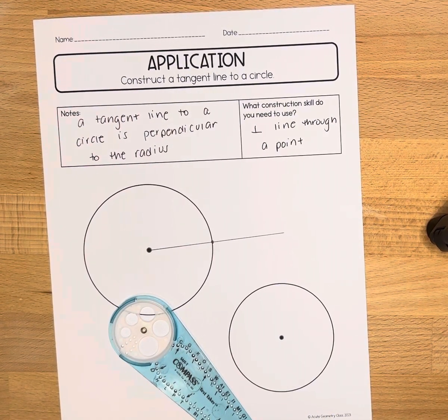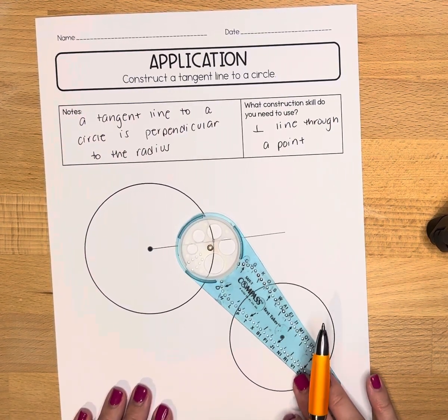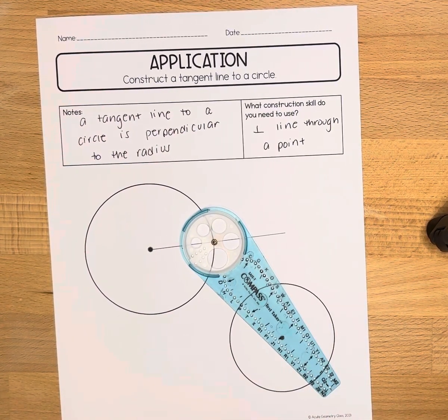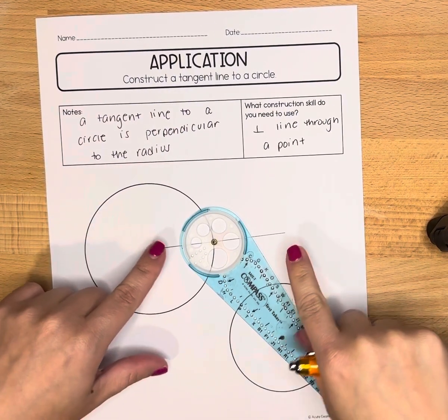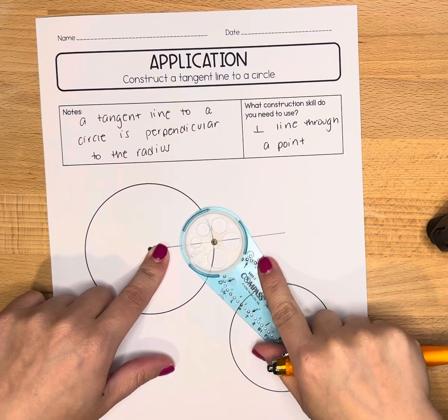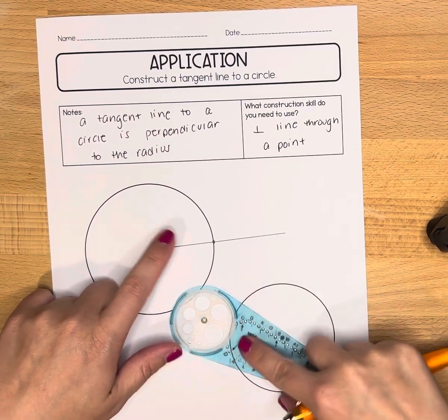When we do the perpendicular line through a point, we are going to put our compass on that point and draw an arc that crosses the original line or line segment twice. That's why I extended it so that it will cross twice.